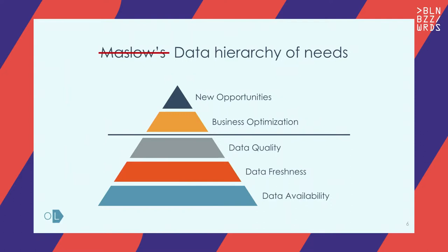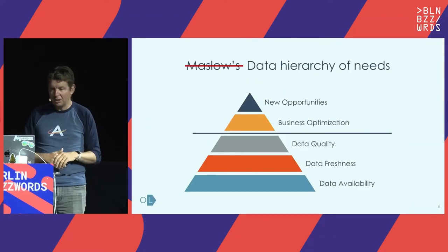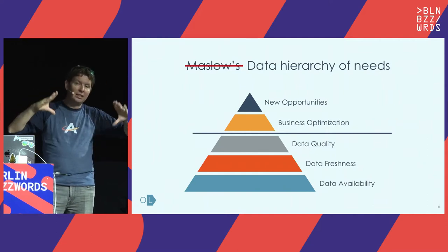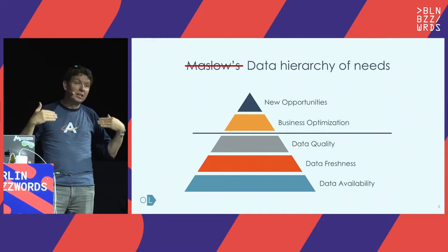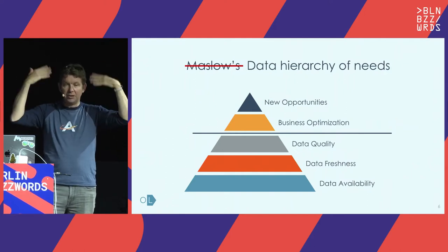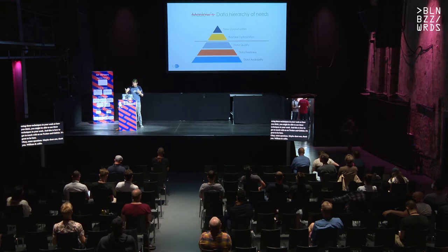We apply this same idea to data. First, the data needs to be available — it needs to be showing up every day, the new information needs to be fresh and should not take a lot of time to show up. Then it needs to be correct. Once you have these three basic needs, that's where you can optimize your processes, learn, make decisions, find new opportunities. It's like a waterline — you need to get your head above water before you can do anything with your data.